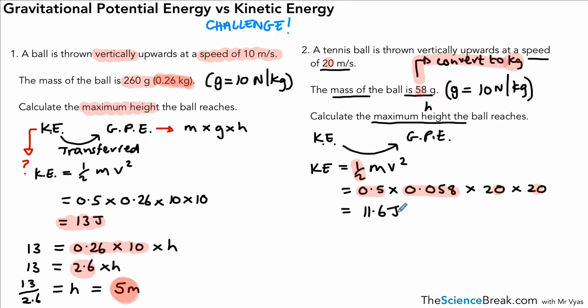So the ball is thrown with kinetic energy of 11.6 joules, and that's going to be transferred to gravitational potential energy, assuming there are no other energy transfers. So the gravitational potential energy at the maximum height will be 11.6. We know gravitational potential energy is m × g × h, so all we do is put in our numbers. The mass is 0.058, we multiply that by 10, which is given to us in the question, but we don't know the height, and the height is what we're trying to calculate.